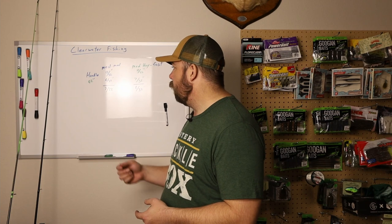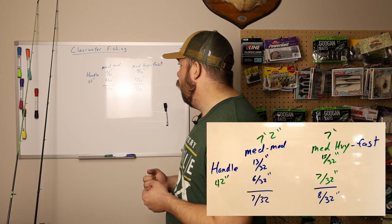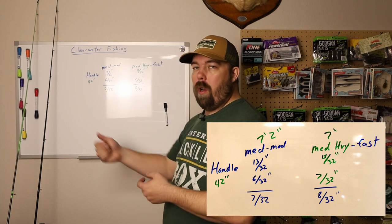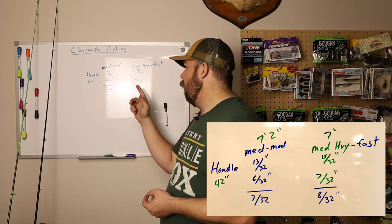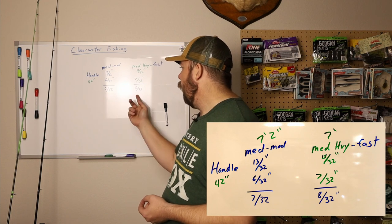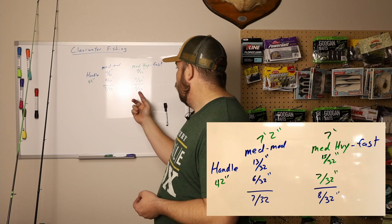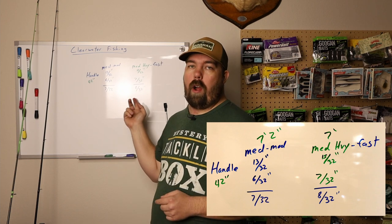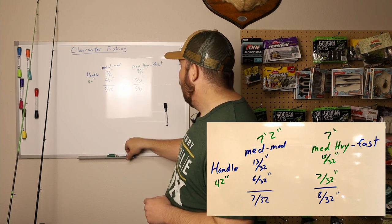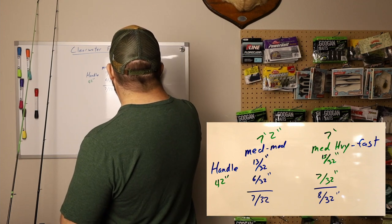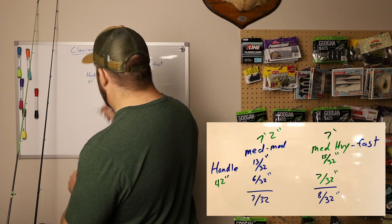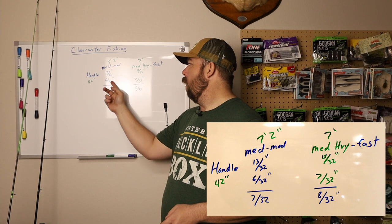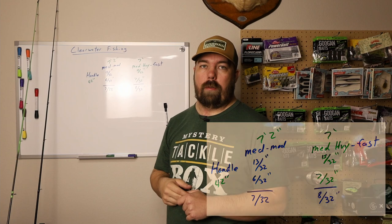I took measurements 42 inches away from the handle on both rods. The moderate action rod was 6/32 of an inch in diameter at that point; the fast action rod was 7/32. That gives us deltas of 7/32 and 8/32 respectively. You might wonder why the fast action rod is still rated fast despite having a slower-looking taper — but it's also thicker overall and only seven feet long versus seven feet two inches, so the taper ends sooner.